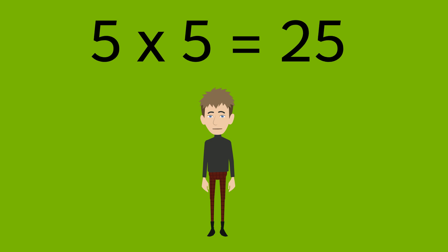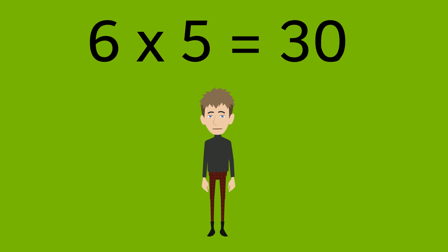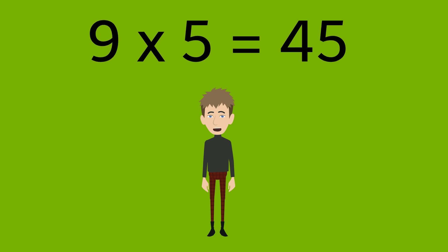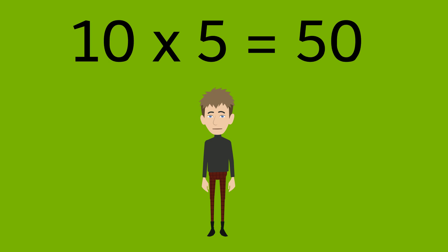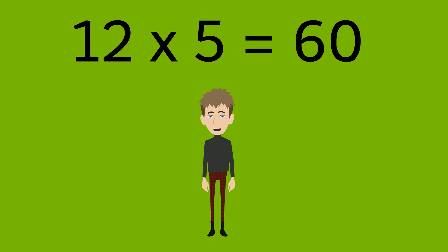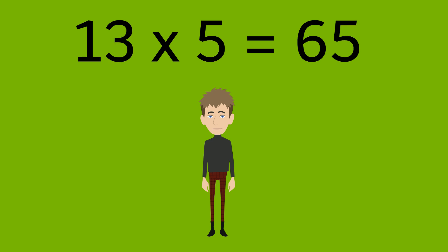5 times 5 is 25. 6 times 5 is 30. 7 times 5 is 35. 8 times 5 is 40. 9 times 5 is 45. 10 times 5 is 50. 11 times 5 is 55. 12 times 5 is 60.